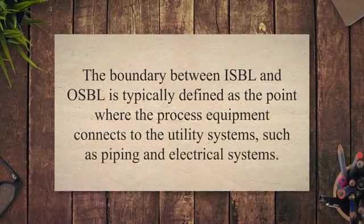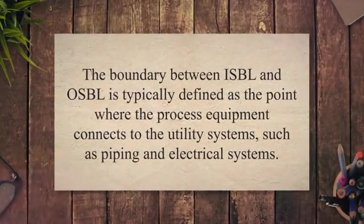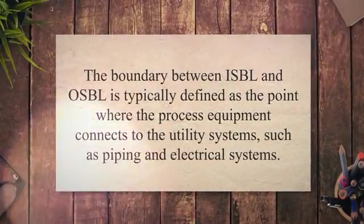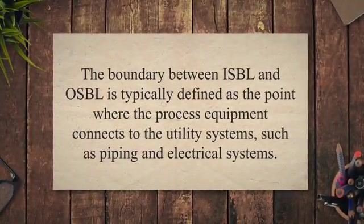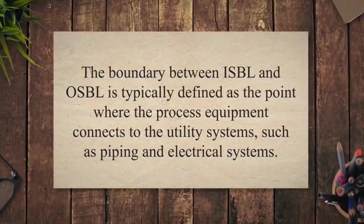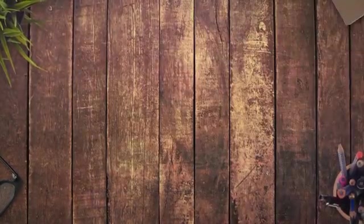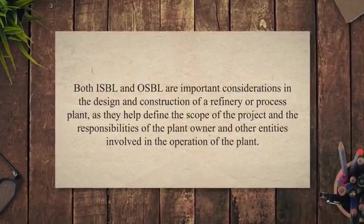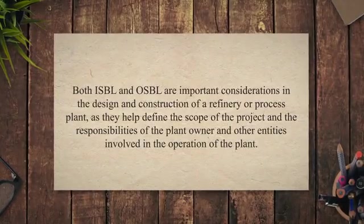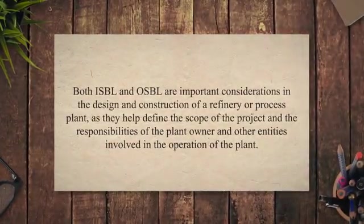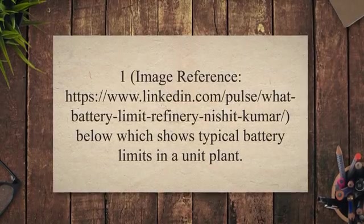The ISBL is where the primary process takes place, while the OSBL is where the supporting facilities and equipment are located. The boundary between ISBL and OSBL is typically defined as the point where the process equipment connects to the utility systems, such as piping and electrical systems. Both are important considerations in the design and construction of a refinery or process plant, as they help define the scope of the project and the responsibilities of all entities involved.